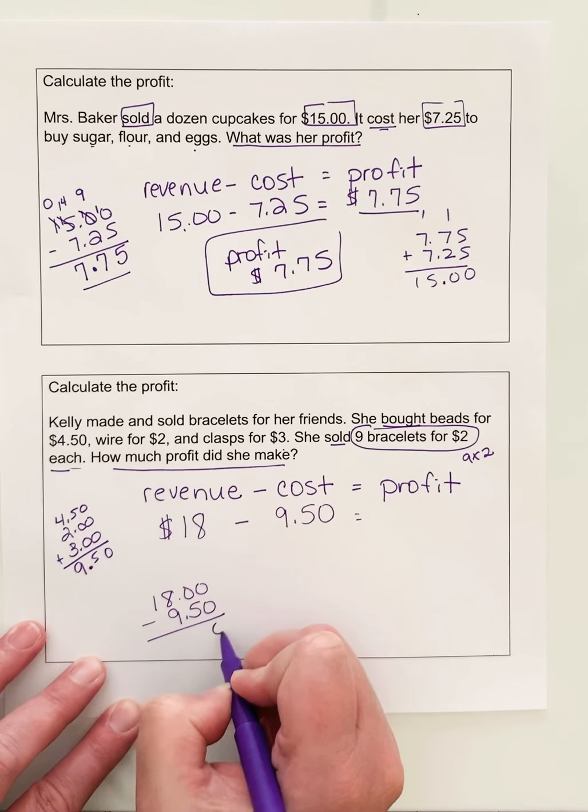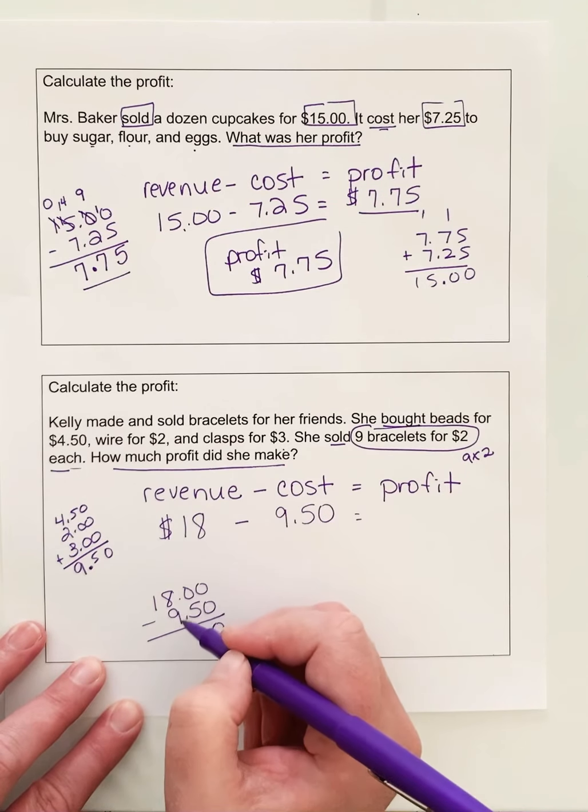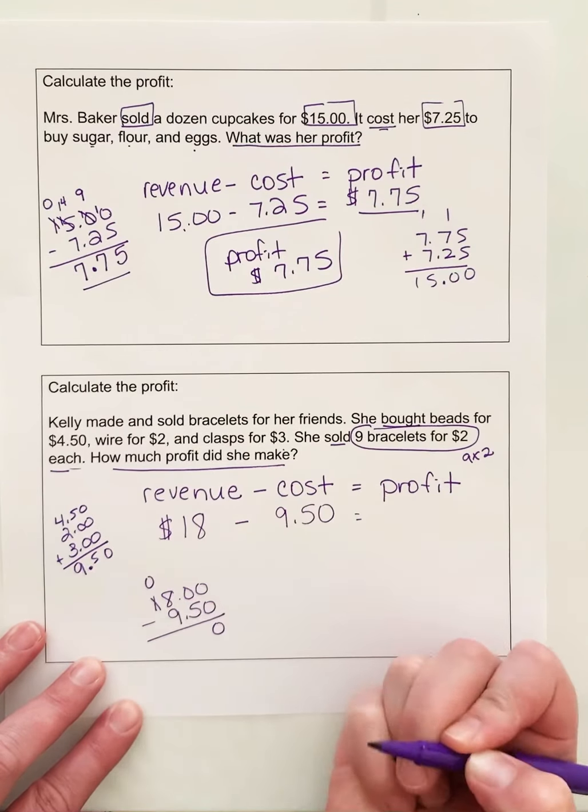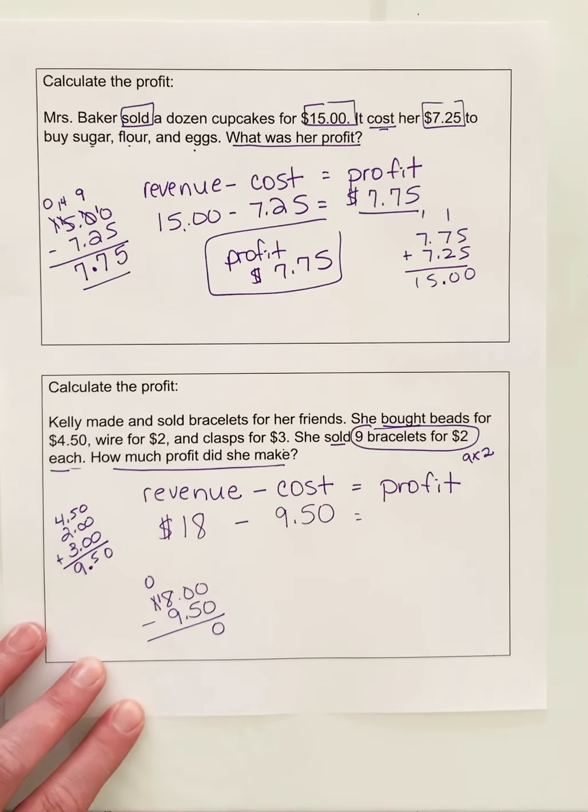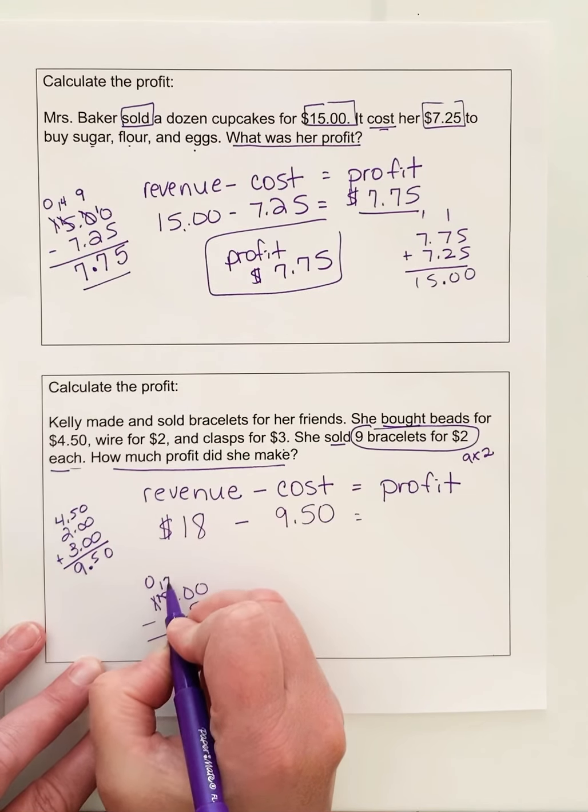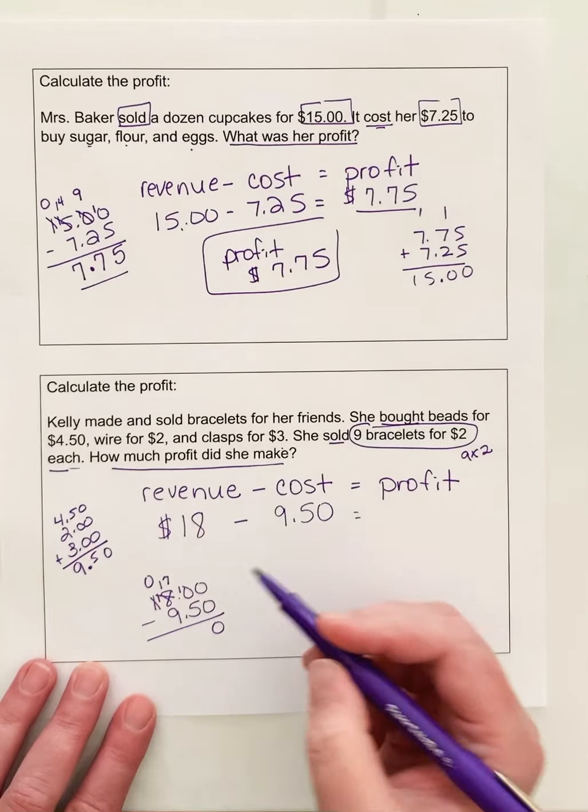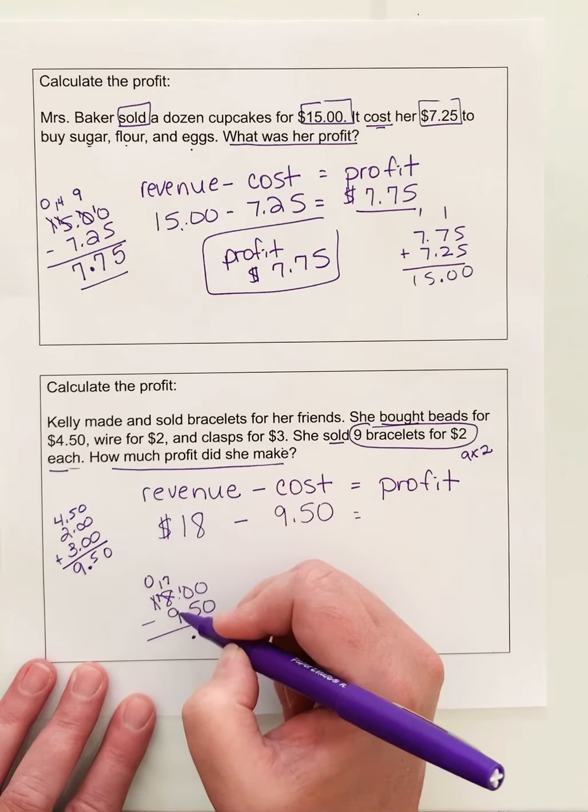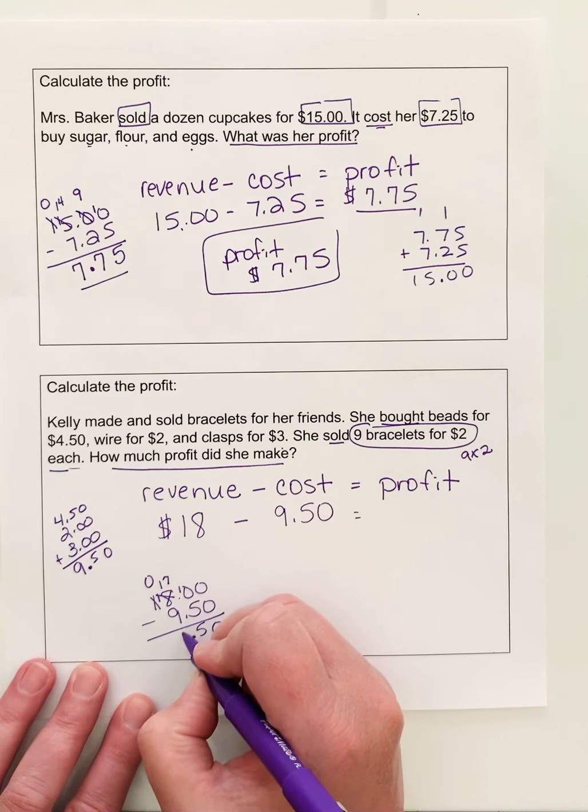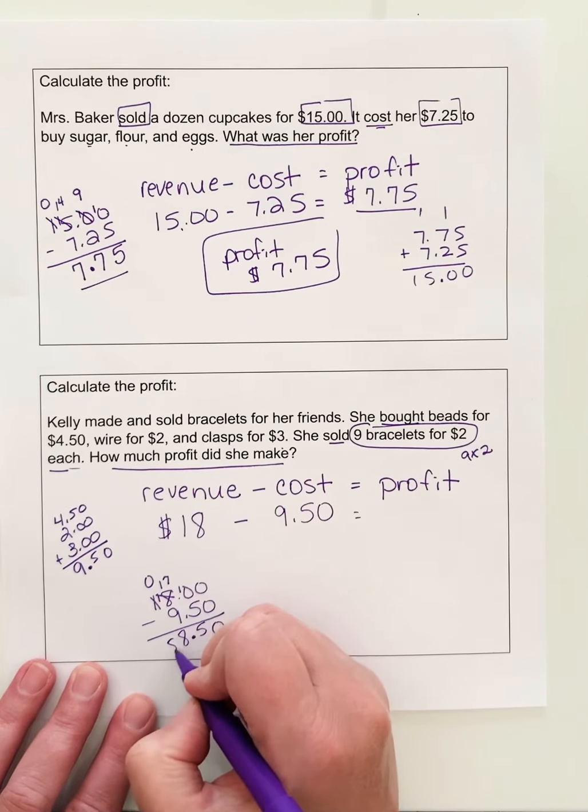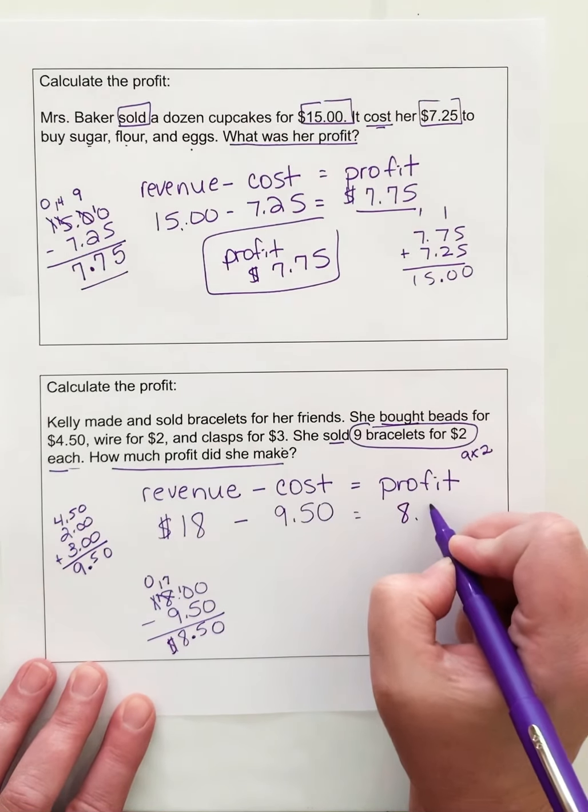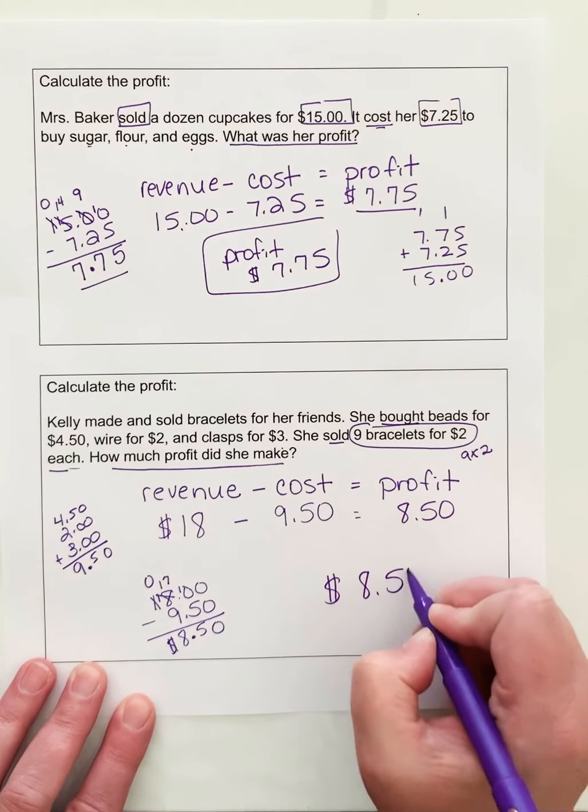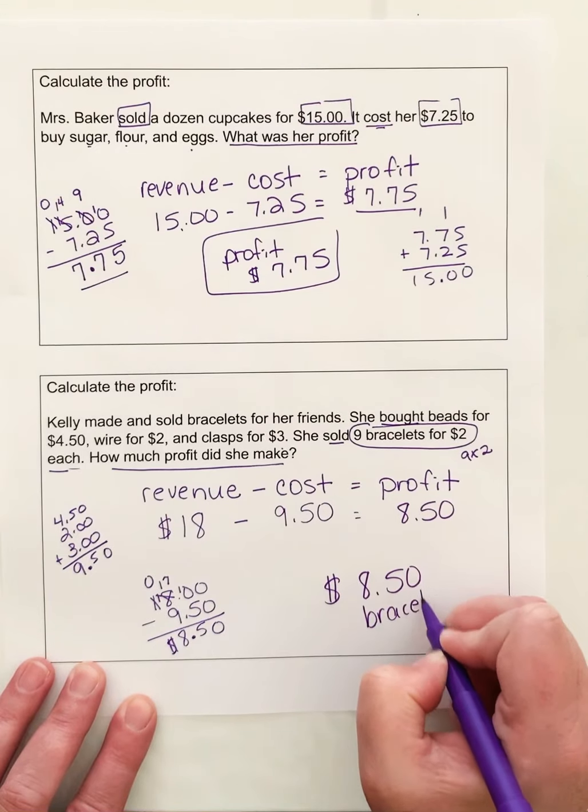See, 0 minus 0 is 0, but I cannot take 5 from 0. I can take it from 8, but I see 8 is less than 9 as well. So I'm just going to go ahead and come from here. That turns into 18. Take 1 away. That turns into 17, and that becomes 10. 10 minus 5 is 5. Drop down your decimal. 17 minus 9 is 8. 8.50 is what is remaining. So she made a profit of $8.50 selling bracelets.